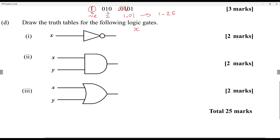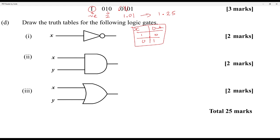Draw the truth table for the following logic gates. The first one is a NOT gate. We have 0 and 1 as the possible inputs, so the output will be the opposite. The next one is AND. Both inputs must be 1 for it to count. Inputs are: 0-0, 0-1, 1-0, and 1-1. The output is 0, 0, 0, 1 — that's the standard AND gate.